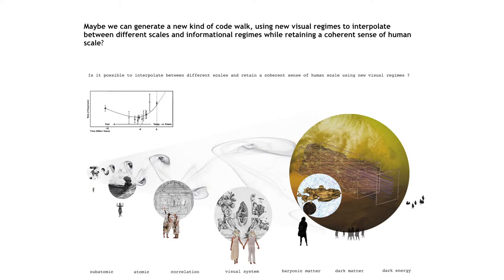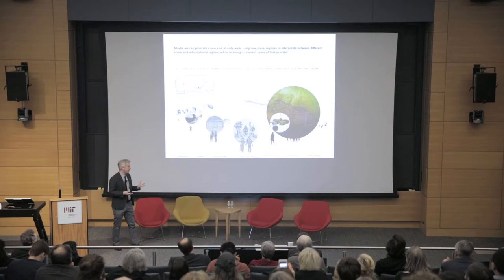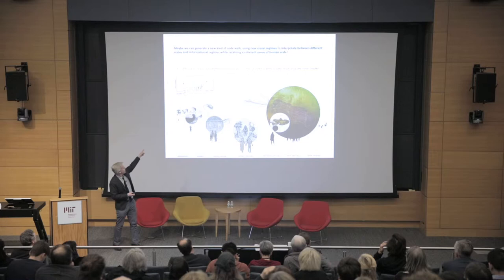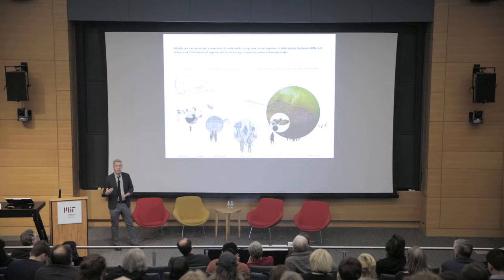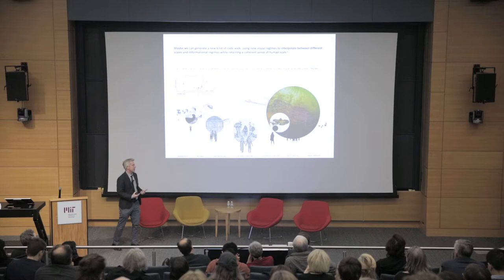This would allow the potential for a question like this to evolve — a correlative space where informational regimes can correlate up to the next scale. This relational theory would allow a user to enter VR and wander from the very smallest subatomic space into the nanoscale, into the correlative space of human cognition, into the intricacies of the visual system, and then keep going up to the scale of baryonic matter, dark matter, and finally to the scale of dark energy.